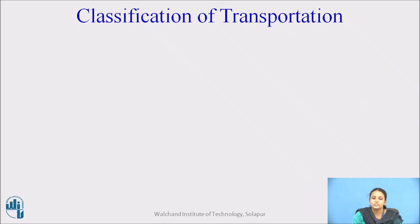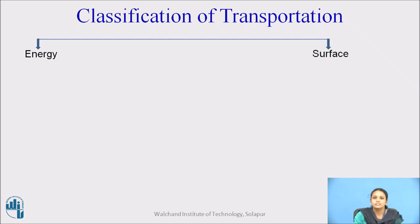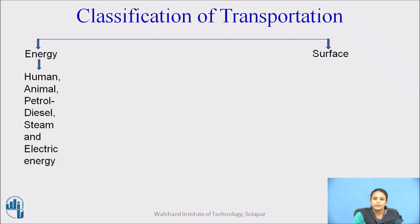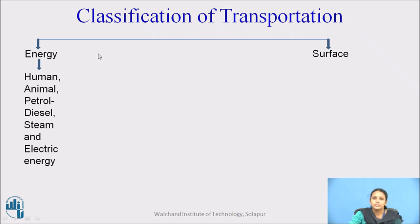Now, classification of the transportation system. This transportation system is classified on energy and surface. Energy means human, animal, petrol, diesel, steam, and electric energy. In earlier days, humans would travel with a bicycle powered by human energy, or use animal energy such as a bullock cart or horse cart. Nowadays, mostly we use petrol, steam, or electric energy.